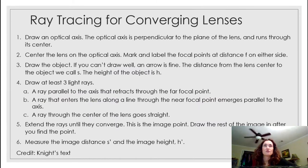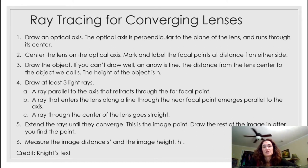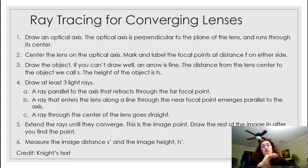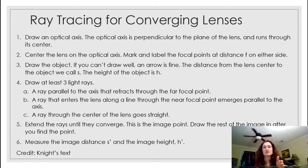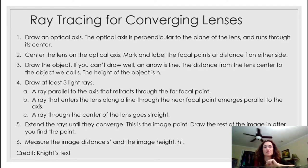We'll go through how images are formed for both converging and diverging lenses. I'll use Knight's textbook, which has a nice step-by-step approach. Step one: draw the optical axis, which is perpendicular to the plane of the lens and runs through its center. Step two: center your lens on the optical axis and mark your focal points f on either side — the near focal point on the same side as the object. It helps to use a ruler.